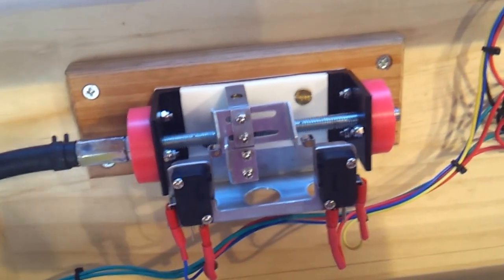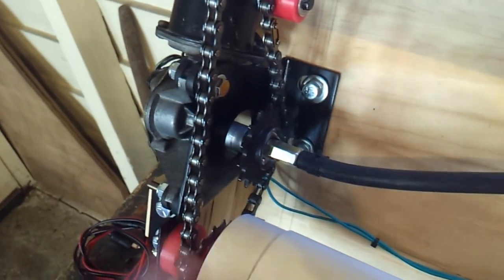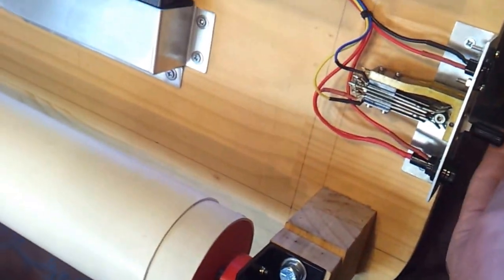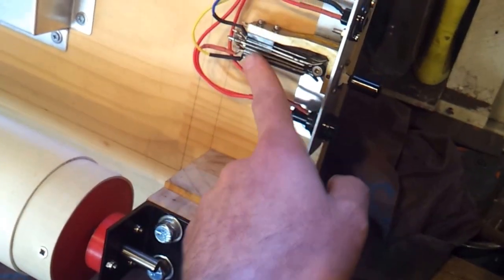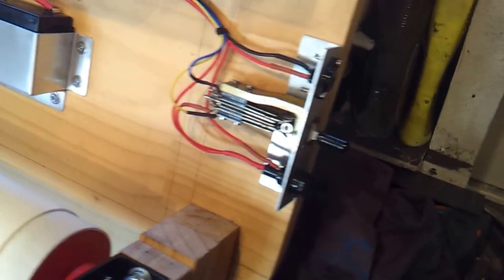Now the switches are just connected basically in series with the motor and the switch here, which is just a double pole switch to change the direction of the motor. To power the motor, I just made up this little switch panel here which has the switch and a fuse.